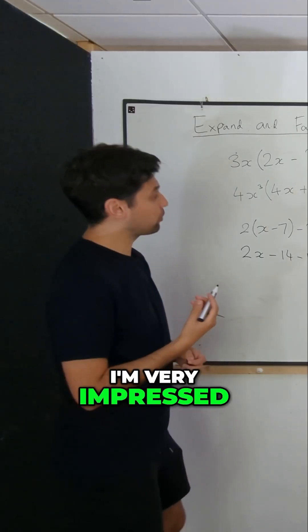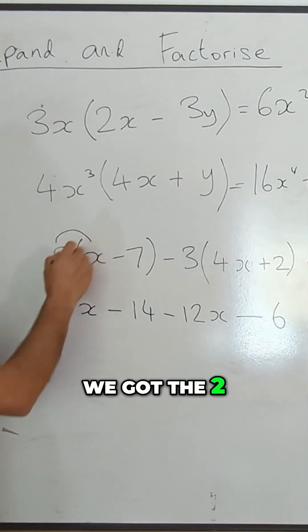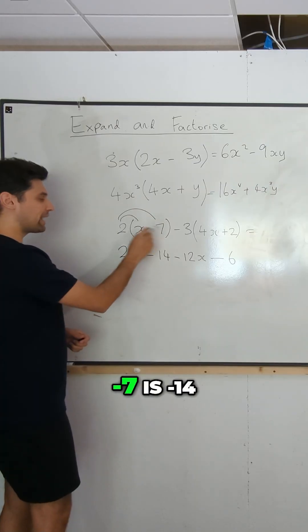Really, really good. I'm very impressed. So yes, we've got the two times X, which is 2 X. Two times minus seven is minus 14.